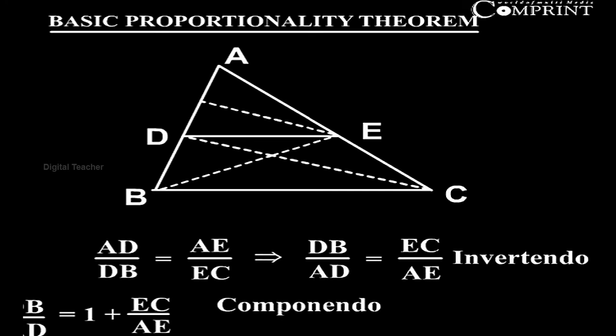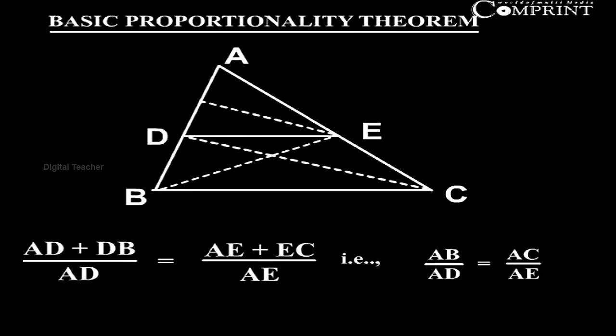Also, AD by DB equal to AE by EC implies DB by AD equal to EC by AE. Invertendo. Therefore, 1 plus DB by AD equal to 1 plus EC by AE. Componendo.